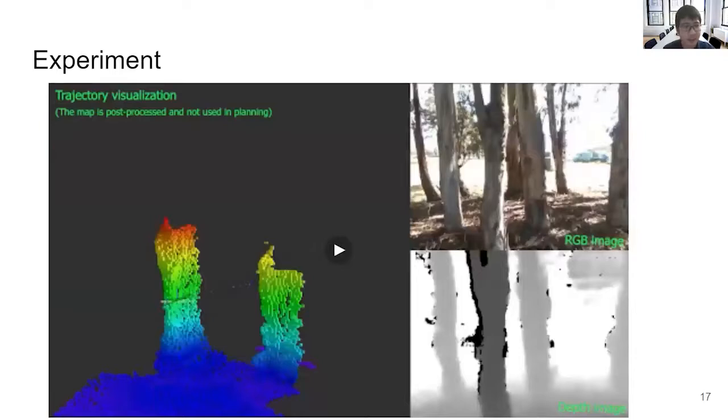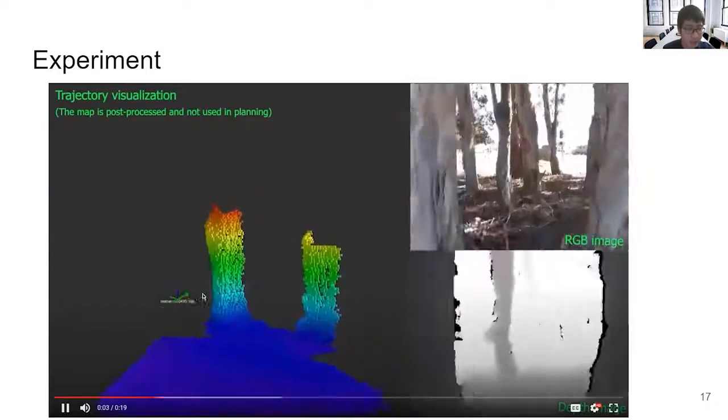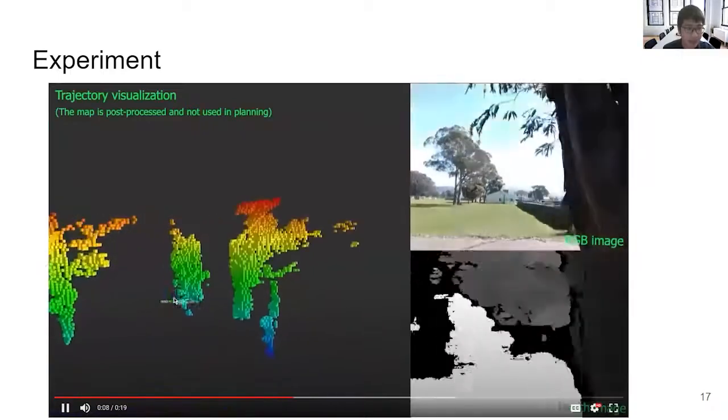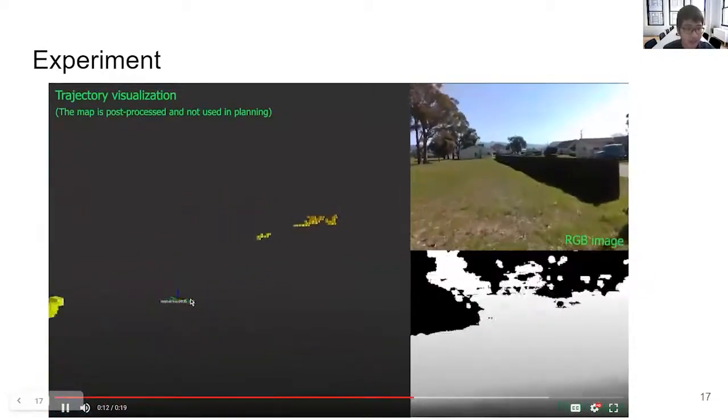This video is a post-processed visualization of the path of the vehicle. On the right, we show the video of the RGB image and the depth image onboard. On the left, we show the trajectory of the vehicle as a series of frames, and the velocity of the vehicle is shown as a green arrow.